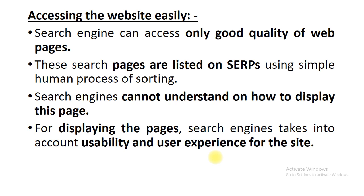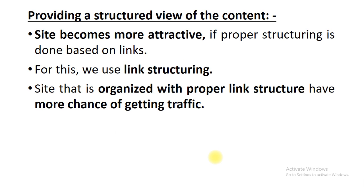Website architecture mostly focuses on the following functionalities. The first functionality is called accessing the website — you need to create your website in such a way that it can be easily accessed not only by crawlers but also by visitors. When you create good quality web pages, they can naturally be found by crawlers on search engine result pages. However, search engines cannot understand how to display pages the way a human can, applying experience and past knowledge to sort and index them.